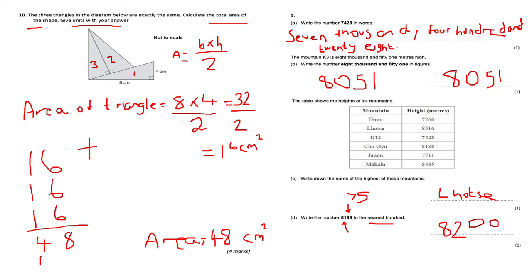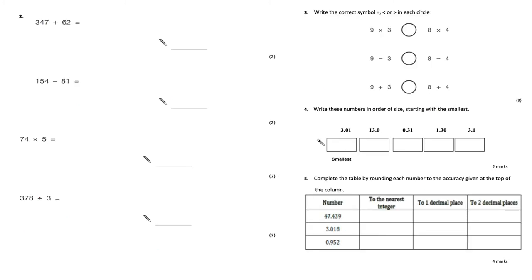Question 2: 347 add 62. Putting everything under the correct place value: 7 add 2 is 9; 4 add 6 is 10, write 0 carry the 1; 3 add 1 is 4. The answer is 409.